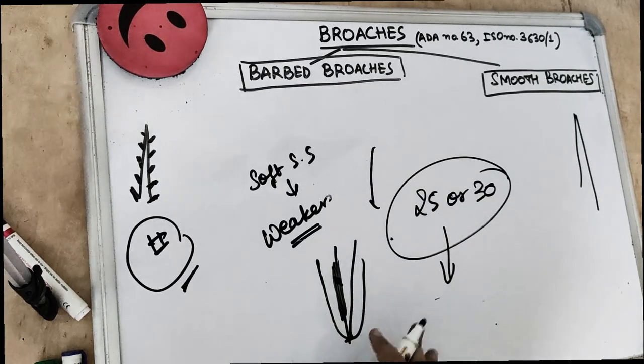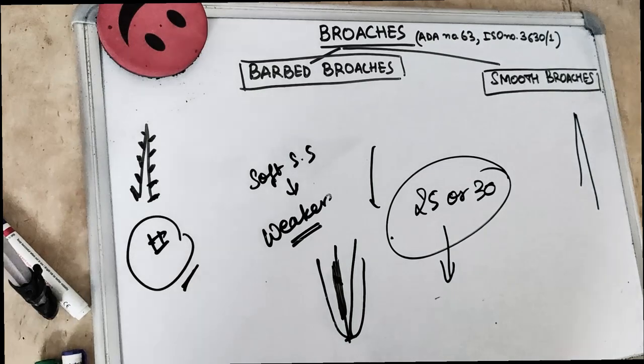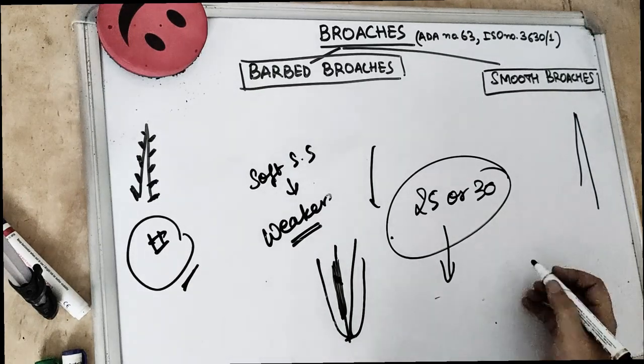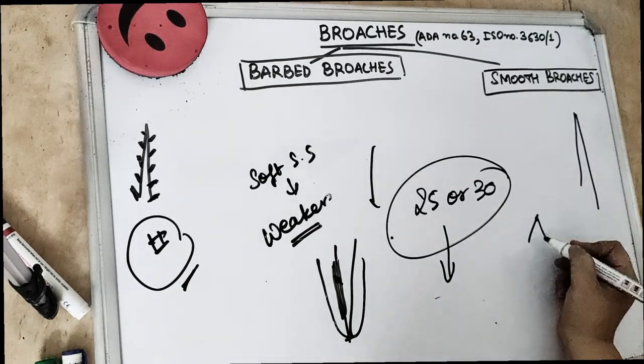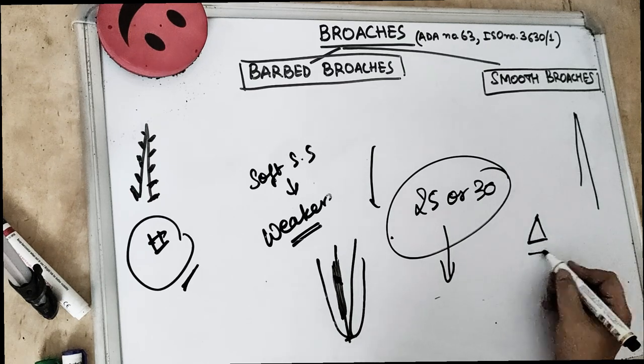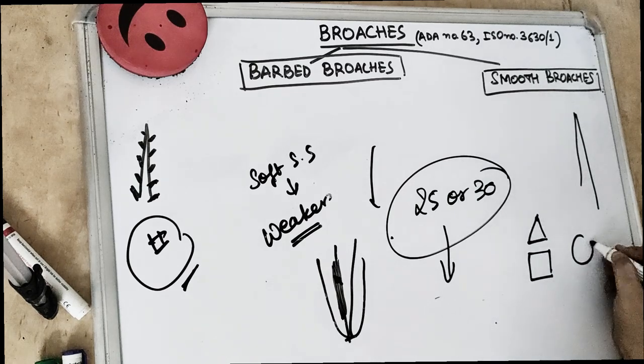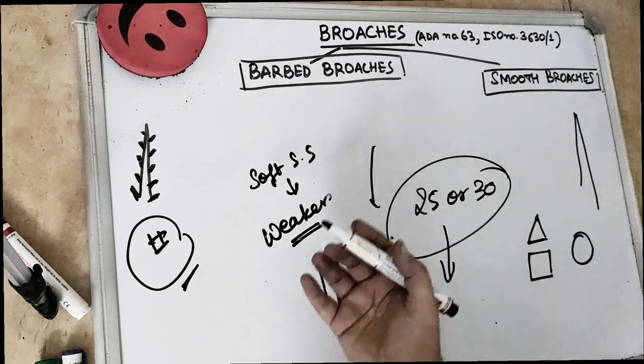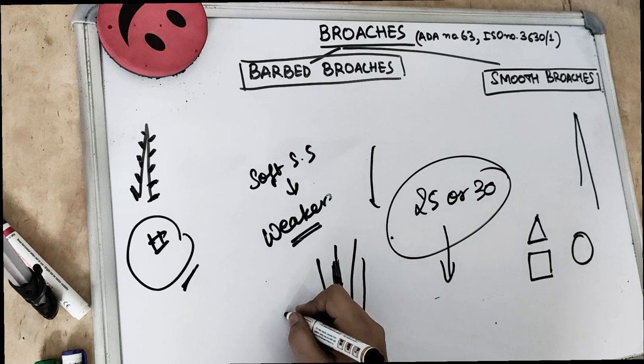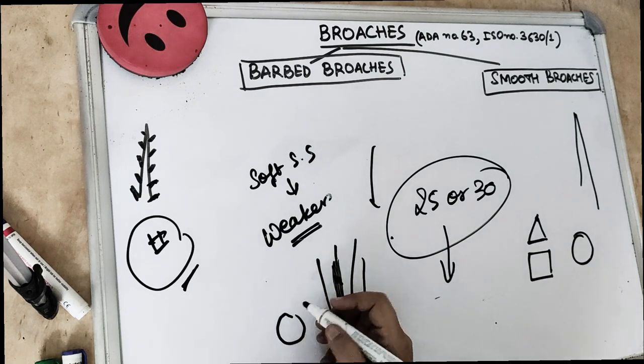So this is about the barbed broaches. So if you remember the cross section, we have already covered the K file. K reamer has a triangular cross section and K file has a square cross section. While on the other hand, H file has a square cross section and also these barbed broaches are also the square cross section with the spikes.